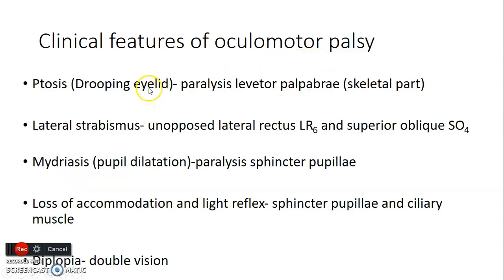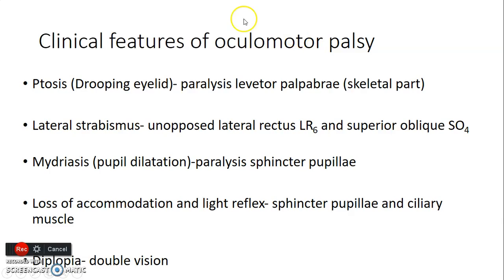Features of oculomotor palsy include: ptosis — drooping of the eyelid — because the skeletal part of levator palpebrae superioris is denervated; lateral strabismus, because medial rectus (which causes adduction) is paralyzed, leaving lateral rectus (innervated by abducens) and superior oblique (innervated by trochlear) to act unopposed, pulling the eyeball laterally; and mydriasis — dilation of the pupil — because the sphincter pupillae, which normally constricts the pupil via the short ciliary nerve from the ciliary ganglion, is paralyzed.